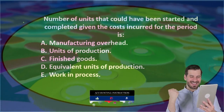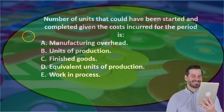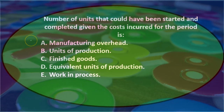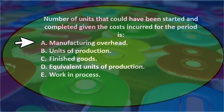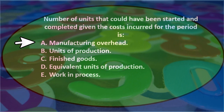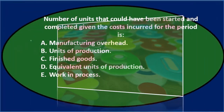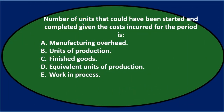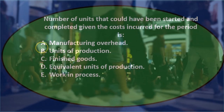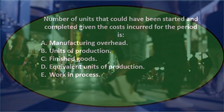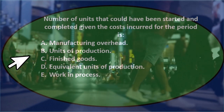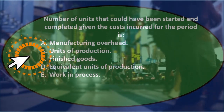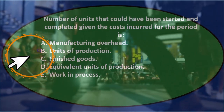Number of units that could have been started and completed given the costs incurred for the period — let's go through them. Option A, manufacturing overhead, doesn't really seem to relate to actual units that could have been incurred, so I don't think that's it. Option B, units of production, has 'units' in it, so I'm going to keep that for now.